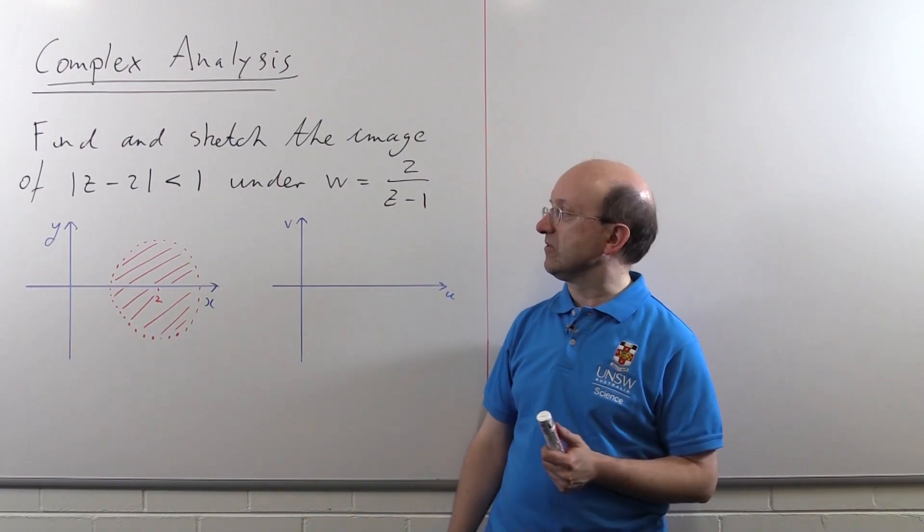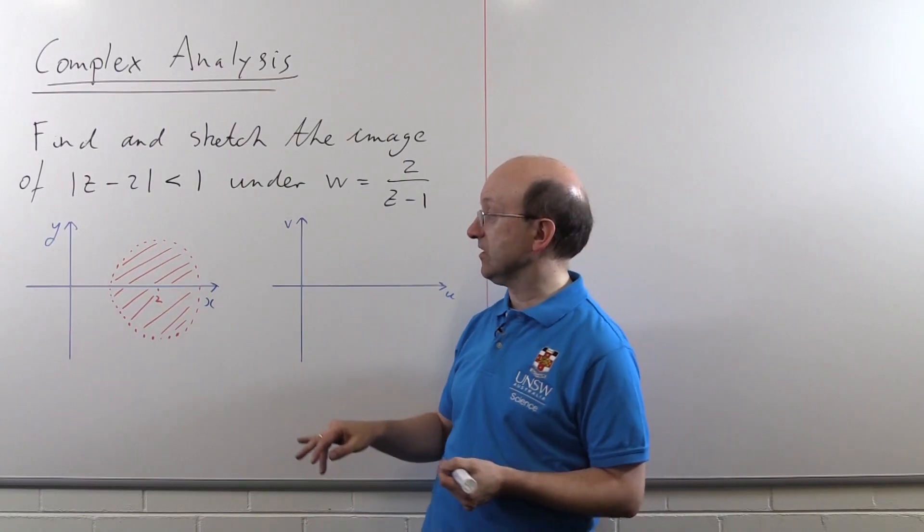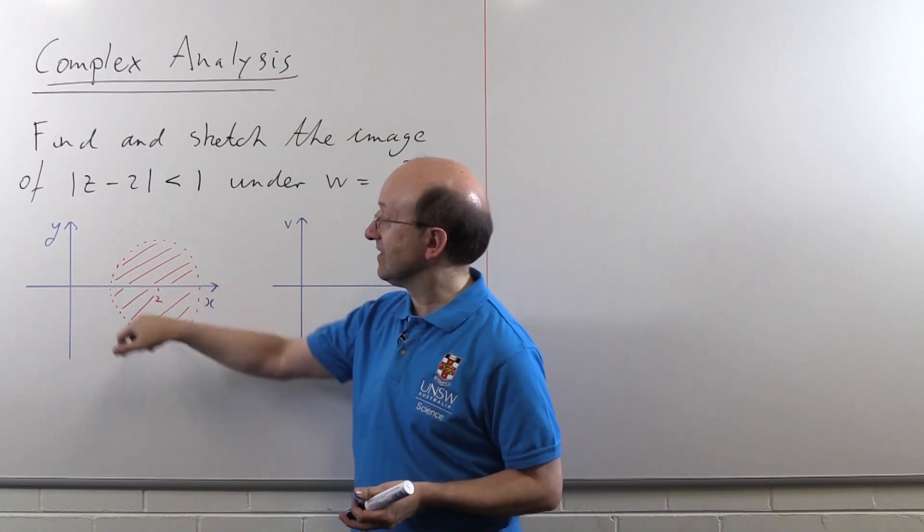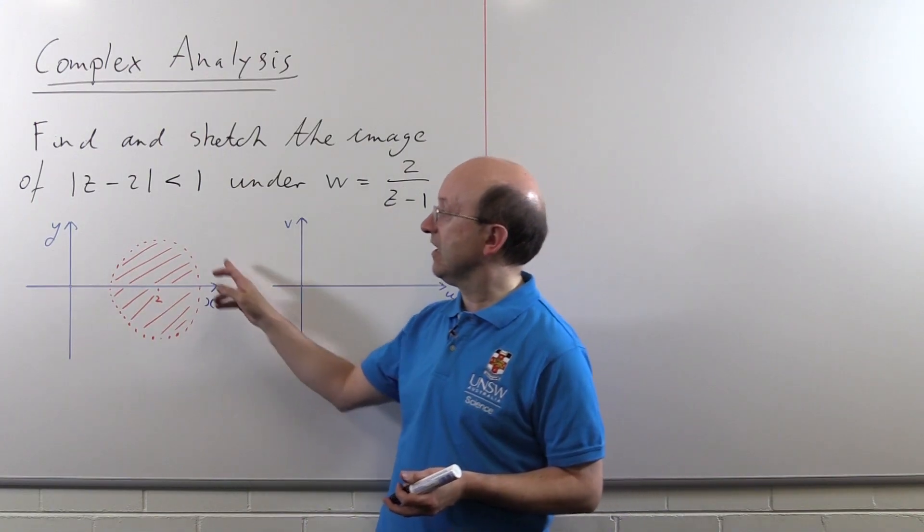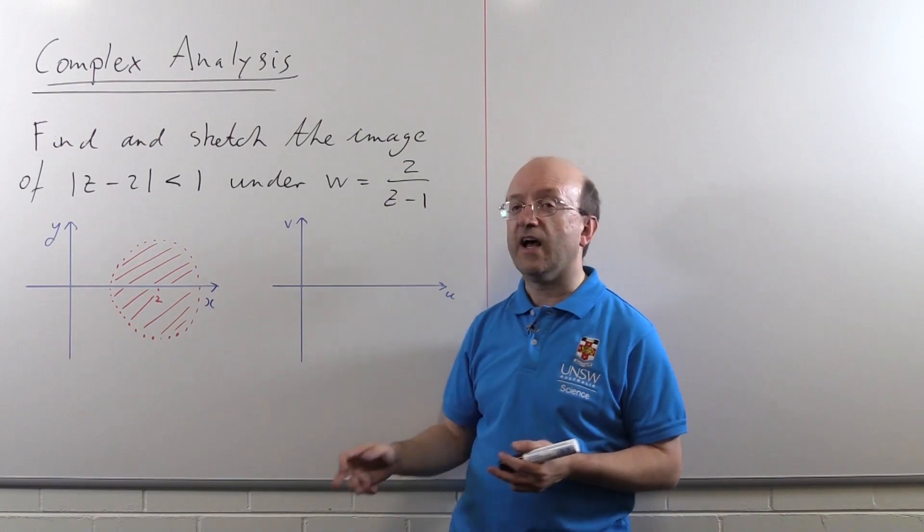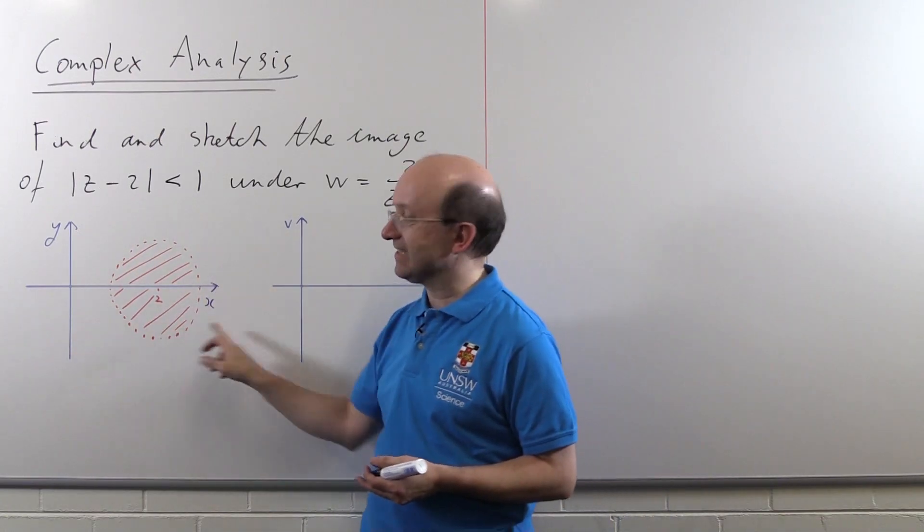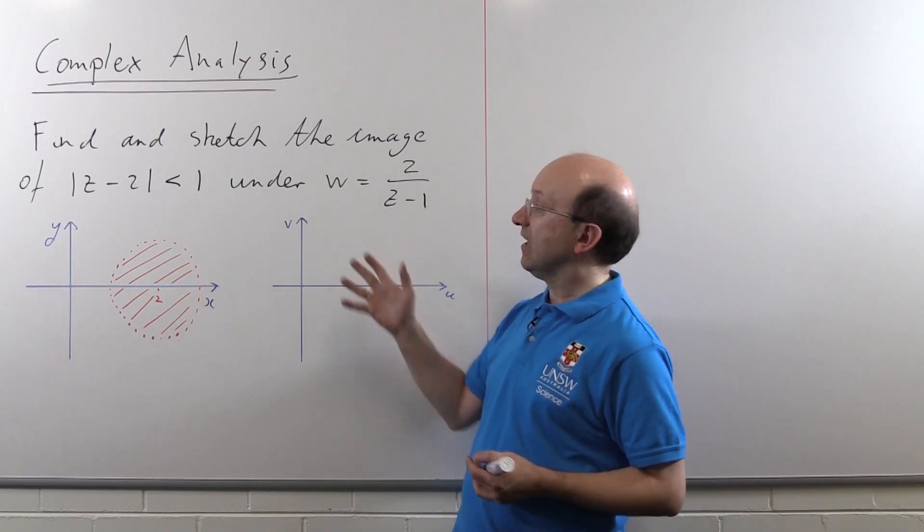Well, |z - 2| < 1 is a set of all points that are within 1 of the point z equals 2. So that's the inside of a circle. Well, a disk not including the boundary because I've got a strict inequality here. And as is typical, I'm using dashed lines to show that the boundary is not included. So the question is, how do we do this?